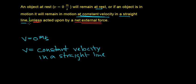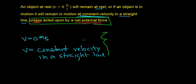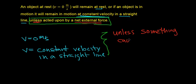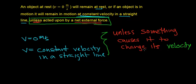If you look at the last statement, it says unless the object is acted upon by a net external force. So this is what an object wants to do. The object wants to either remain at rest or moving at constant velocity in a straight line, and it will continue to do so unless something causes it to change its velocity. Even though you don't see the word acceleration in Newton's first law, what it is saying is that the thing that causes an object to change its state of motion — that is, to change its velocity — is a force.